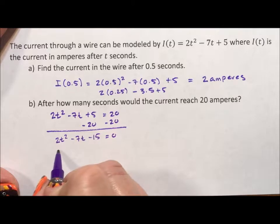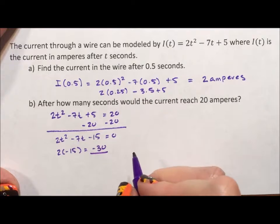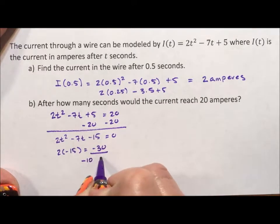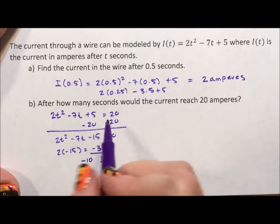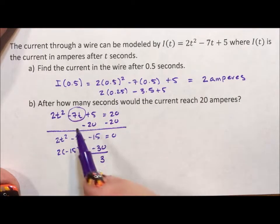So I'm going to do AC, 2 times negative 15 equals negative 30. And two numbers that multiply to negative 30 and add up to 7 are negative 10 and 3. So what I just did there is I found the two numbers that we need to replace the middle term with.